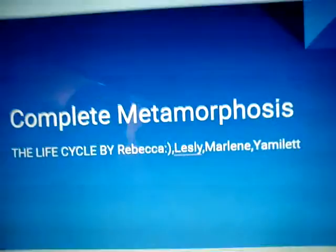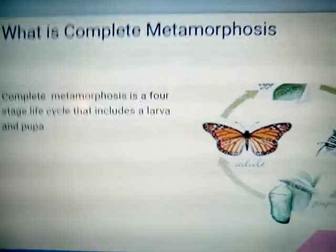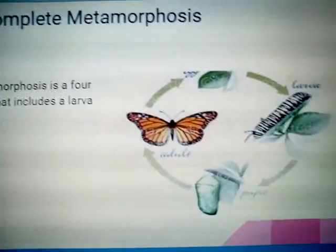What is Complete Metamorphosis? Complete Metamorphosis is a four-stage life cycle that includes a larva and a pupa.